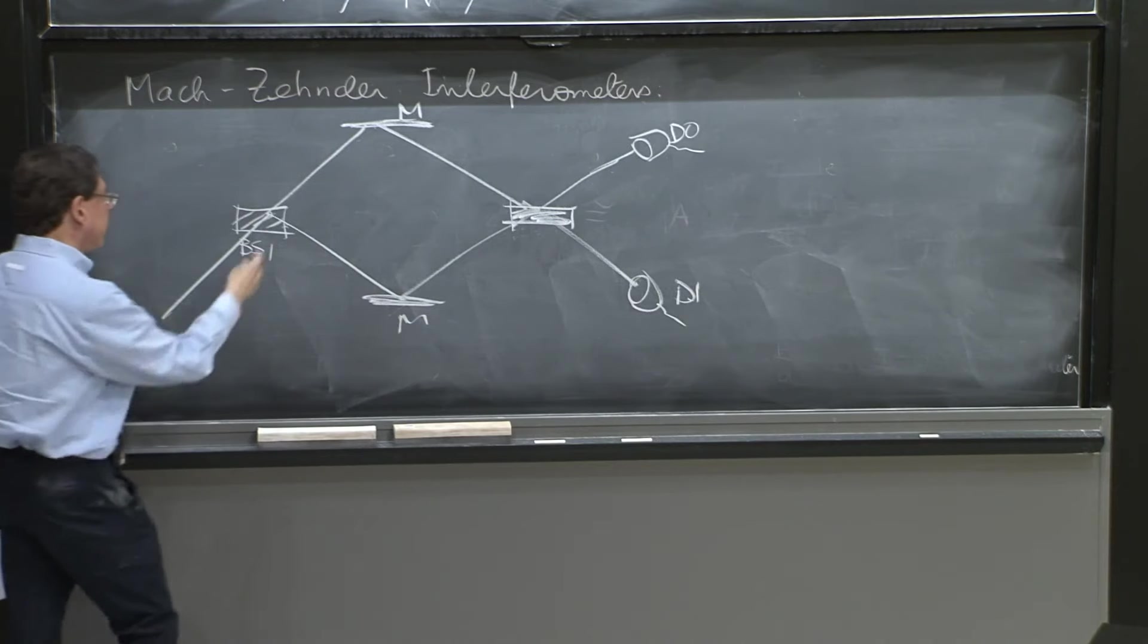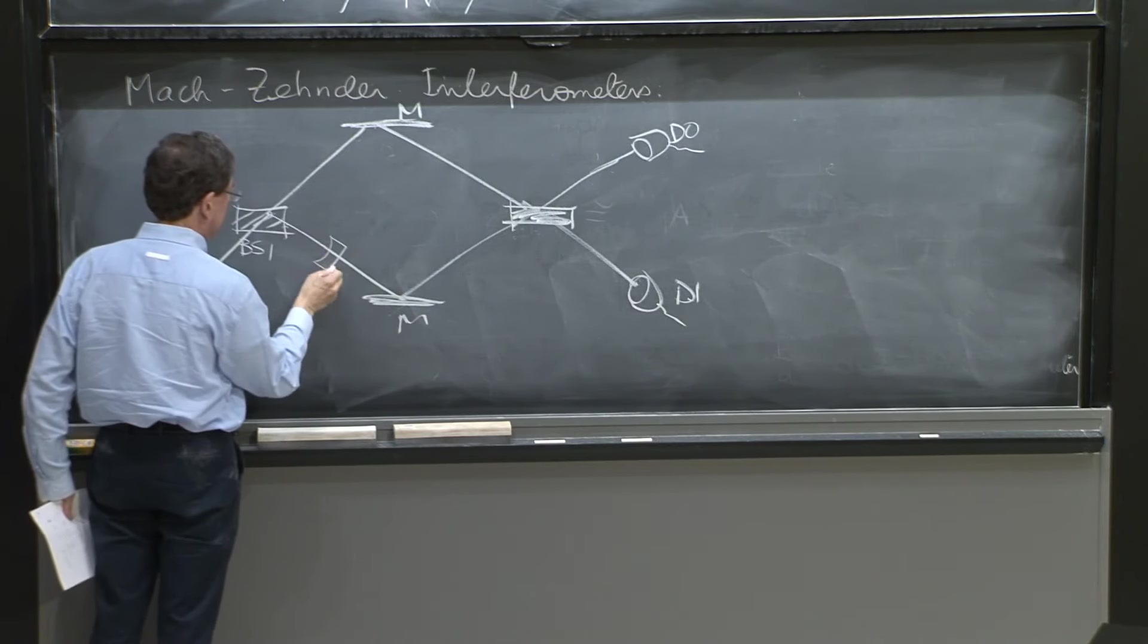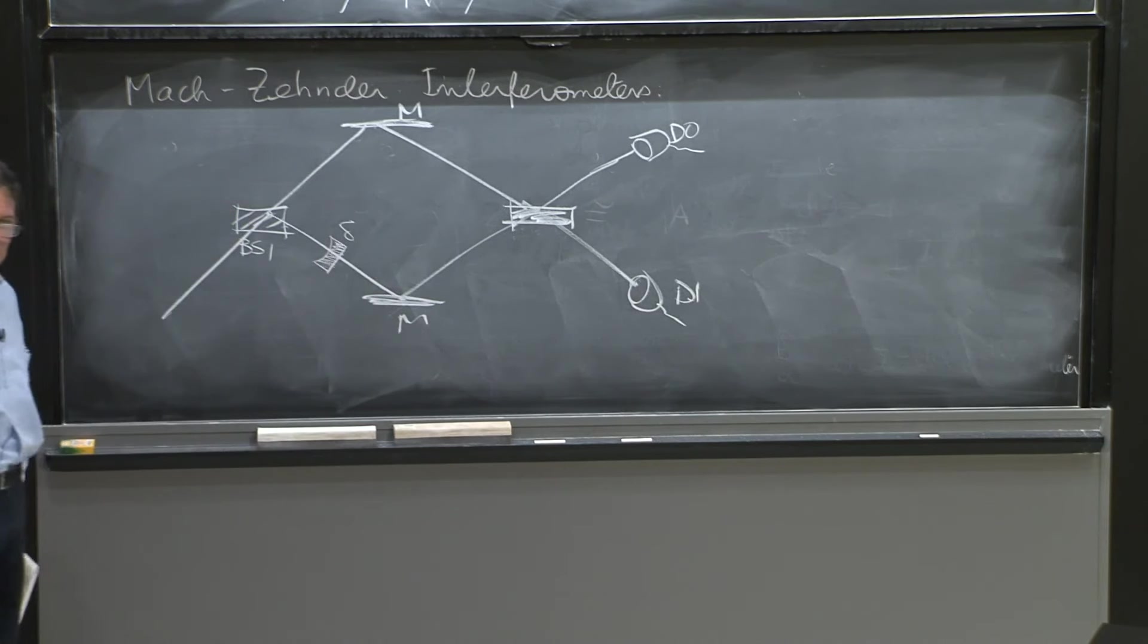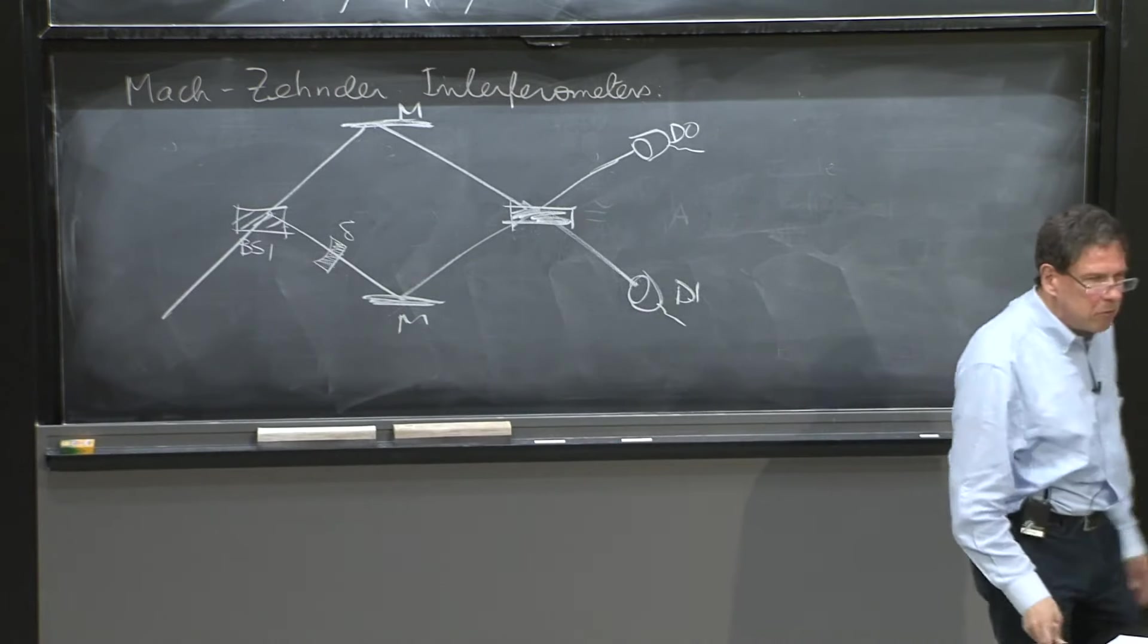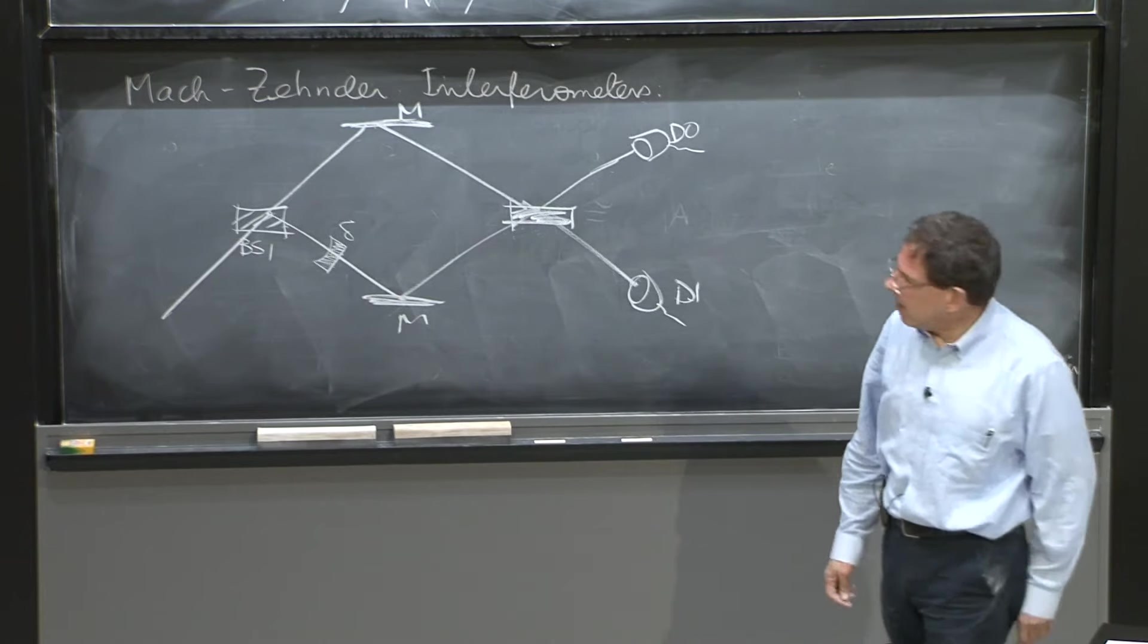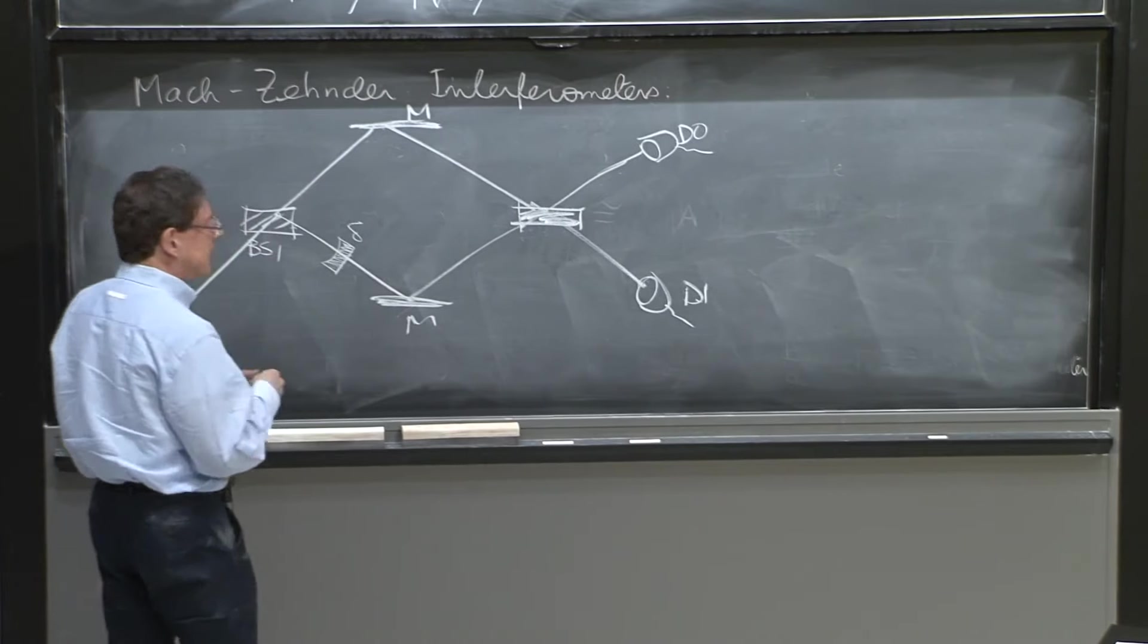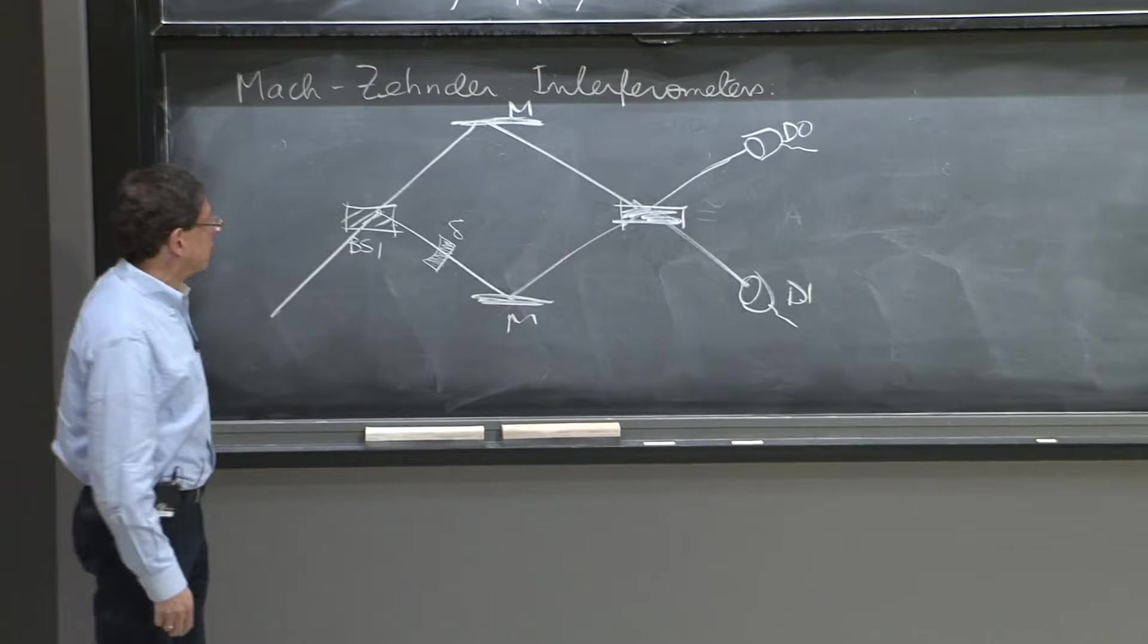We could put here any kind of devices in between. We could put a little piece of glass, which is a phase shifter. We'll discuss it later. But our story is a story of a photon coming in and somehow living through the interferometer. And we want to describe this photon in quantum mechanics, and we know that the way to describe it is through a wave function.